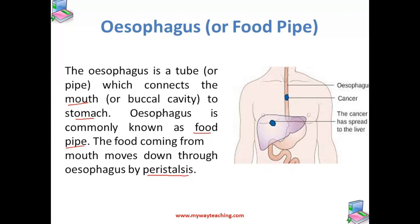Let us try to understand the process of peristalsis. When the food enters the esophagus from the mouth, it is partially digested. The muscles in the walls of the esophagus start alternately contracting and relaxing, producing a wave-like movement which pushes the food down to the stomach.